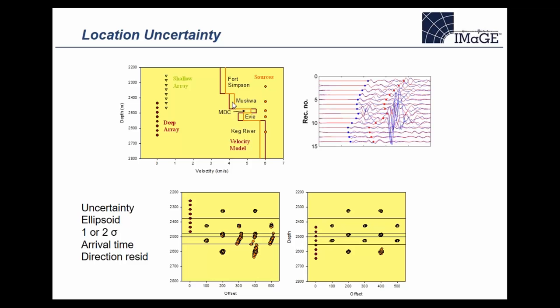We're comparing two downhole arrays, though this could equally apply to surface. The first component of location uncertainty is based on how the location changes with uncertainty of the arrival time of seismic waves at different sensors. Shown at the bottom is a Monte Carlo simulation where arrival times have been perturbed by a few milliseconds — consistent with typical time-picking accuracy — and looking at how the locations then change for a spread of different positions.